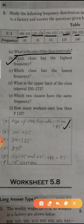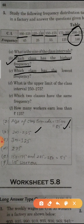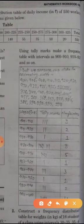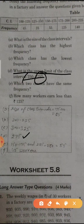Second is, which class has the highest frequency? 200 to 225: 240. This is the highest frequency. C is, which class has the lowest frequency? So 300 to 325, this is the lowest frequency: 20. D, what is the upper limit of the class 225 to 275? So 275, this is the upper limit and this is the lower limit.